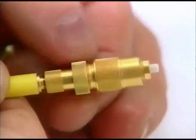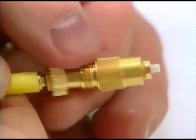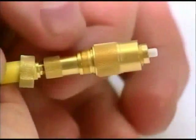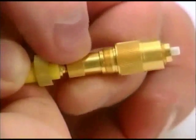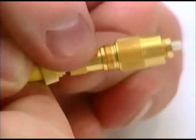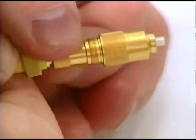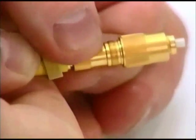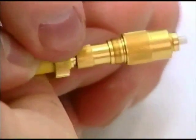So if you loosen that locking nut and bring it back by turning this section, you actually change the distance that the ferrule will stick out from the end of the connector, and that gives us our Z-axis control.